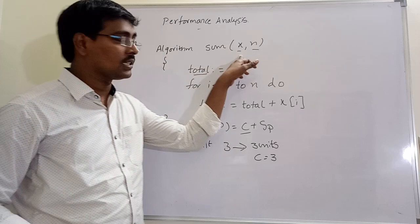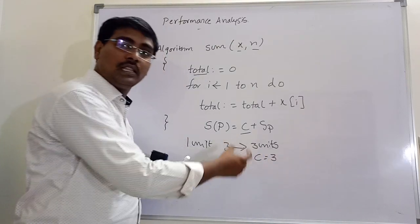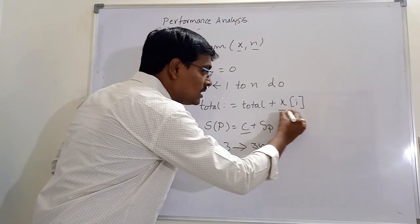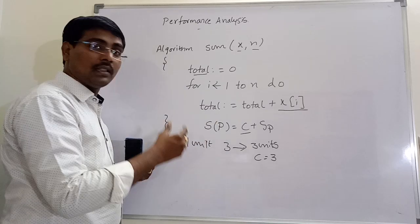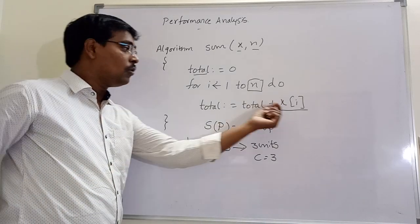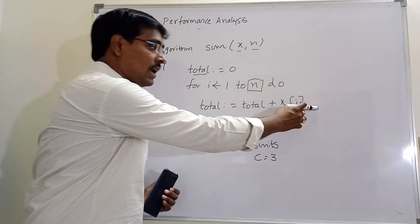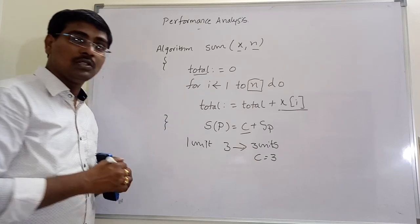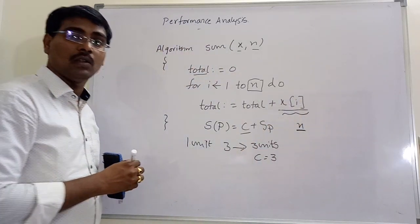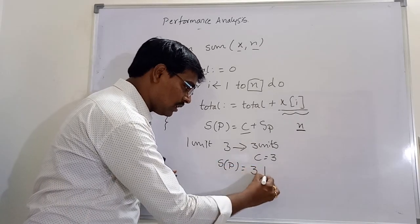Each variable requires one unit of memory: storing x needs one unit, n needs one unit, and total needs one unit — so three variables require three units, meaning C = 3. For the variable part, the array elements depend on the value of n. If n is 5, we need 5 spaces; if n is 100, we need 100 units of memory. So the variable part depends on n.